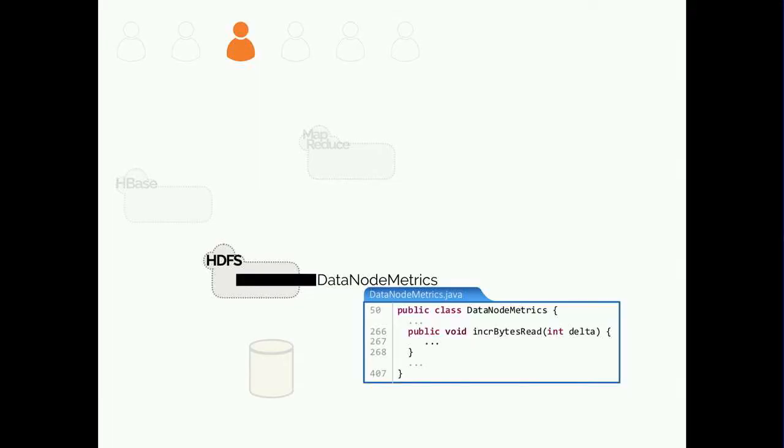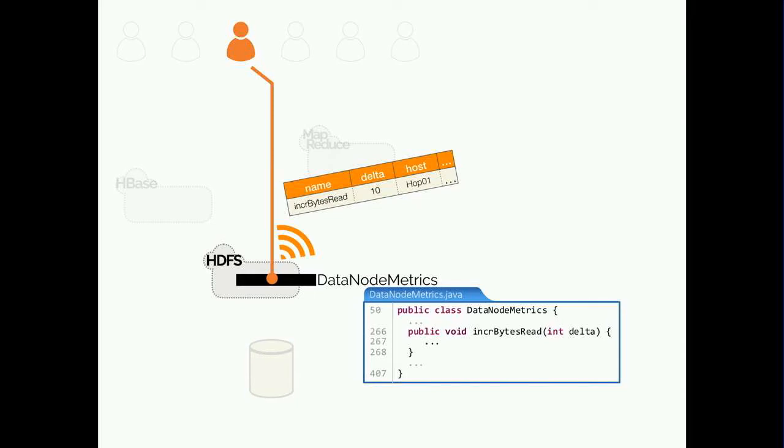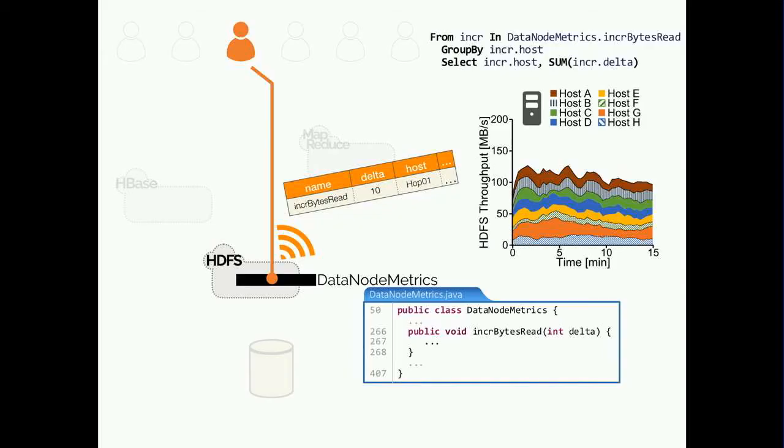Pivot Tracing models events happening across our distributed system as tuples in a streaming distributed dataset, over which it can evaluate arbitrary relational queries. For example, we were looking at data node metrics in the earlier example. With Pivot Tracing's perspective, each time an execution invokes the incrementBytesRead function, we view it as conceptually producing a tuple containing features of that invocation — such as the name of the function, the machine it's on, and the value of the delta variable. Using Pivot Tracing's query language, we can write a query to get the data used by our earlier figure — taking all tuples produced by incrementBytesRead, grouping them by hostname, and summing up the delta variable.